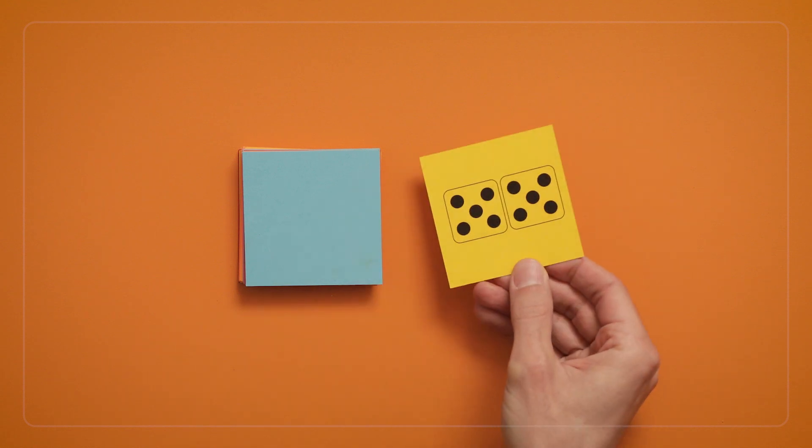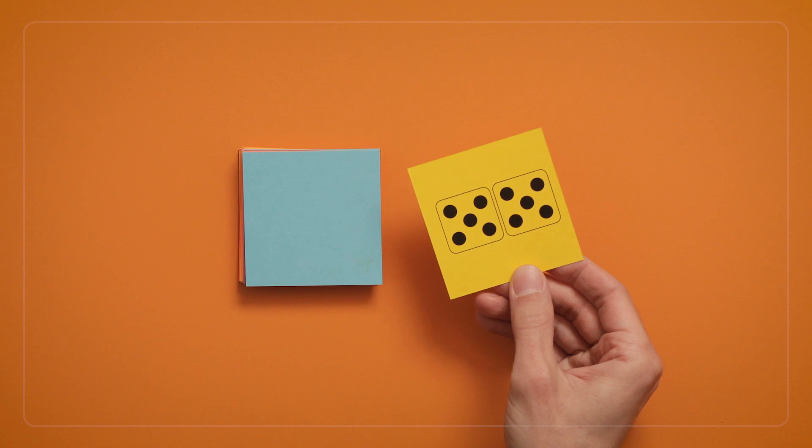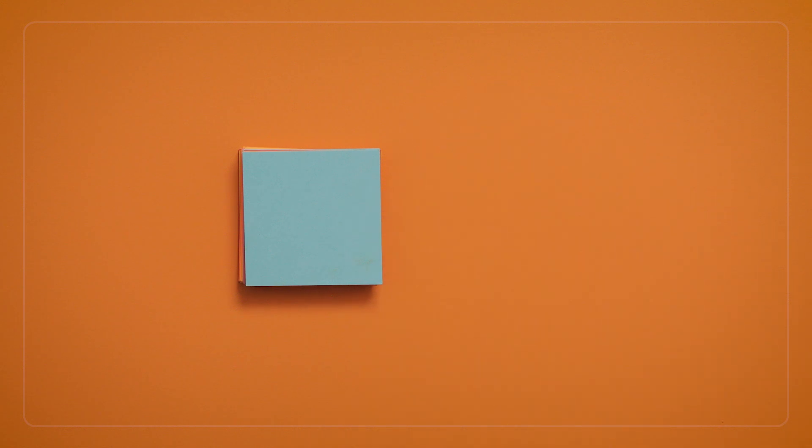For example, ten dots are usually too many to subitize as ten. But if the dots are arranged as two groups of five, and we know that two groups of five make ten, we can quickly see ten.